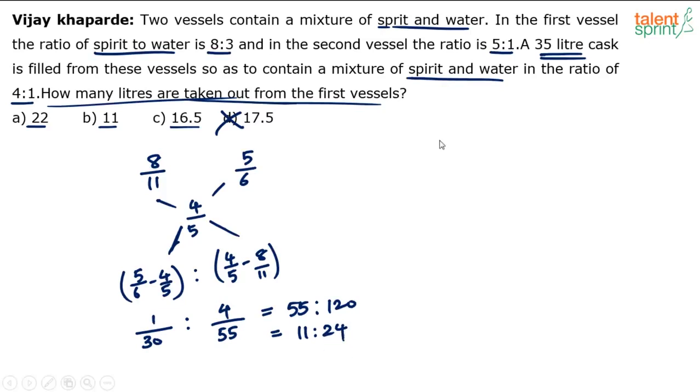If you have to divide 35 liters - see, total quantity is 35 liters. If you divide 35 liters in the ratio of 11:24, the first one will be 11 liters and the second one is going to be 24 liters. Straight. 11 plus 24 itself is 35. So, the first quantity was 11 liters. The quantity taken from the first container was 11 liters. The quantity taken from the second container should be 24 liters.